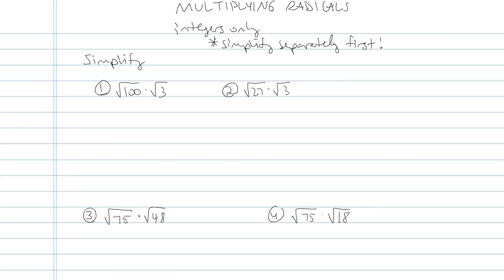This pencast is going to look at multiplying radicals when we have integers only, just working with whole numbers. What I want you guys to do is think about this tip here where you simplify the radicals separately first. Here's what I'm talking about.